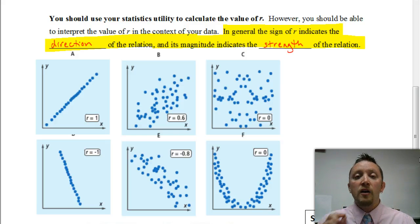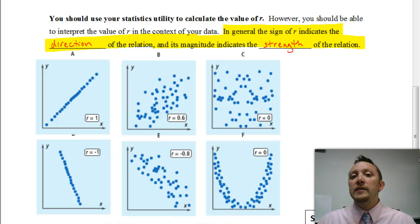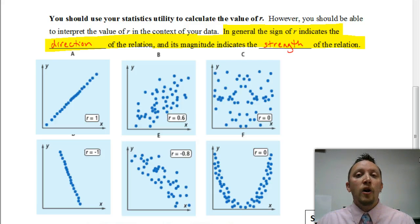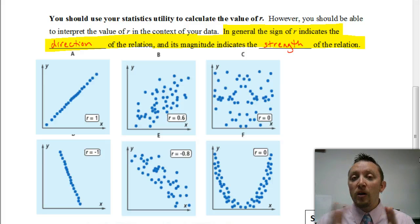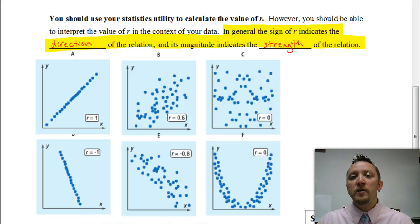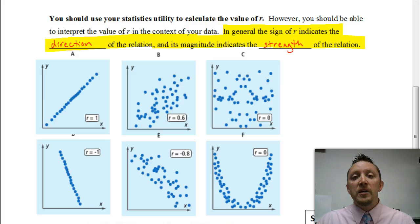Not only does the r value tell us the direction of the graph, but it tells us the magnitude — the actual number for r indicates the strength of the relationship. The closer the value for r is to 1, the stronger the relationship. If you have exactly 1, there's a perfectly strong relationship. A value like 0.9 means a really strong relationship. A smaller value like 0.3 means a pretty weak relationship. The closer you get to 0, the weaker the relationship. If you have exactly 0, that means there is no relationship at all.